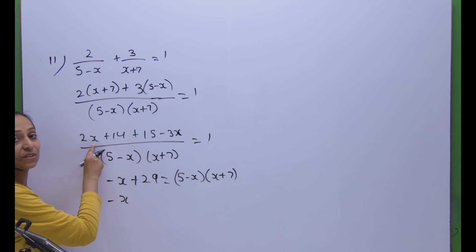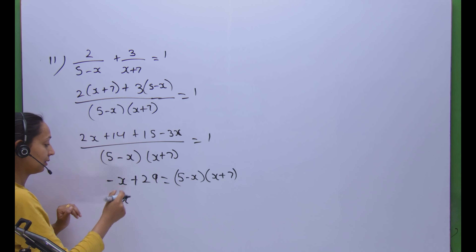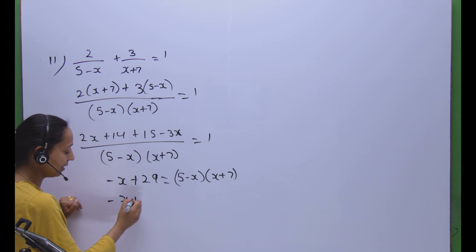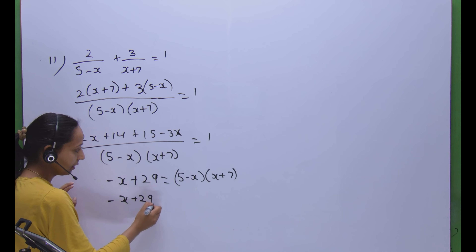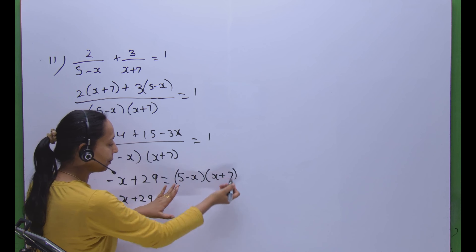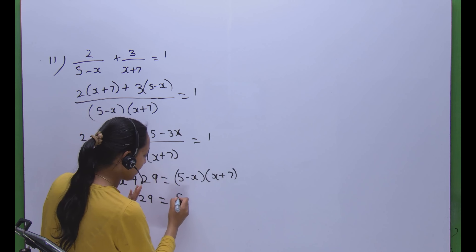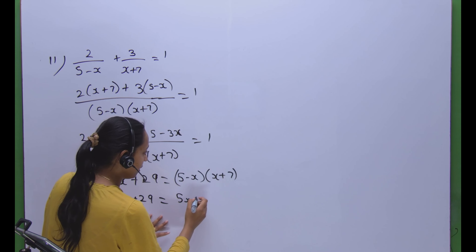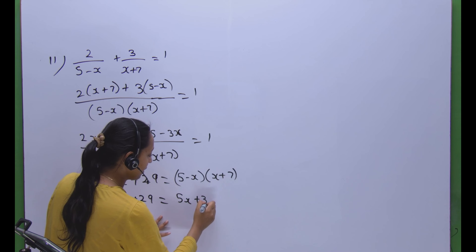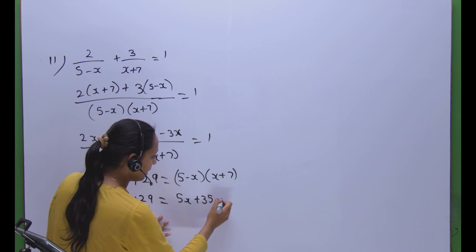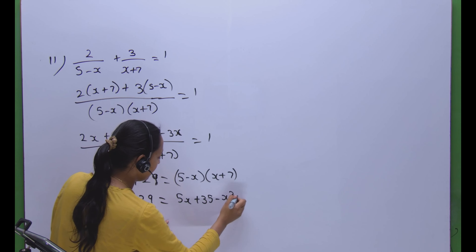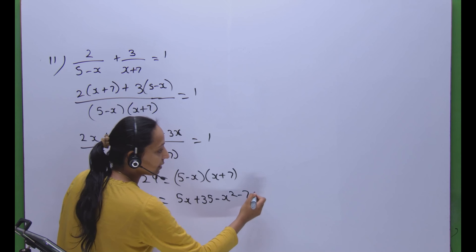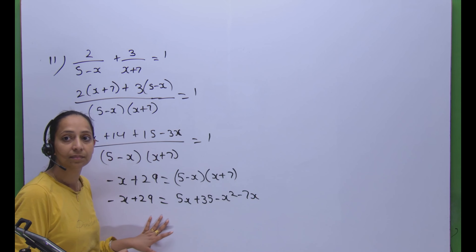Now we open the denominator bracket: (5 minus x)(x plus 7) gives 5x plus 35 minus x squared minus 7x.